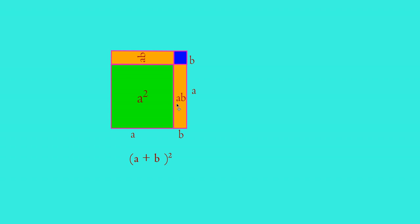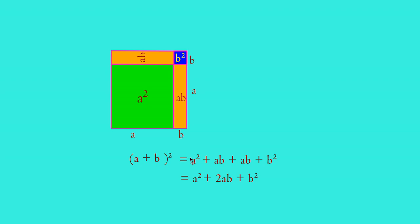The total area of this square of side a plus b, which is a plus b whole square, equals the areas of all four parts: the square of area a squared, two rectangles each of area ab, and the small square of area b squared. So a plus b whole square equals a squared plus ab plus ab plus b squared, and ab plus ab equals 2ab. Therefore, a plus b whole square equals a squared plus 2ab plus b squared.